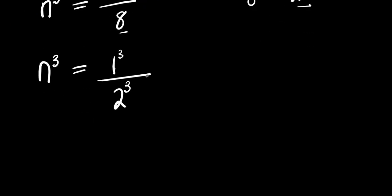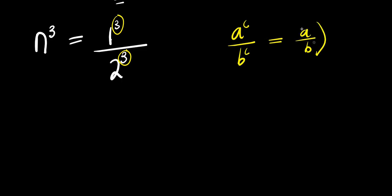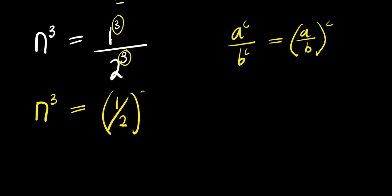Now consider the fact that the exponents here are the same. If you have a^c divided by b^c, this equals a divided by b raised to the power of c. So that means I'm going to have n³ equals (1 divided by 2) raised to the power of 3.